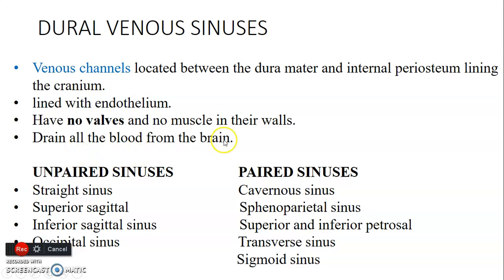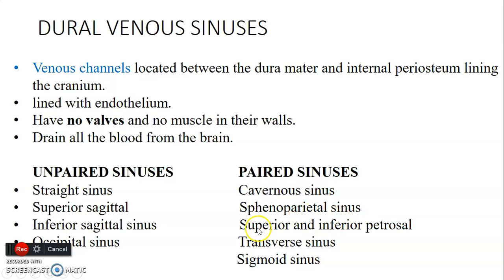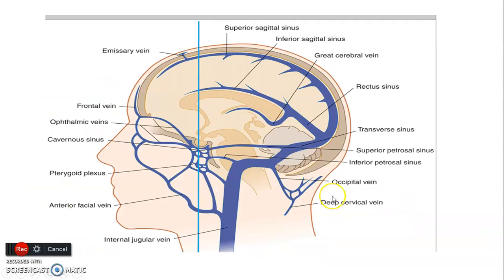The dural sinuses are divided into unpaired and paired. The unpaired sinuses include the straight sinus, superior sagittal sinus, inferior sagittal sinus, and occipital sinus. The paired sinuses include the cavernous sinuses, sphenoparietal sinuses, superior and inferior petrosal sinuses, transverse sinuses, and sigmoid sinuses.